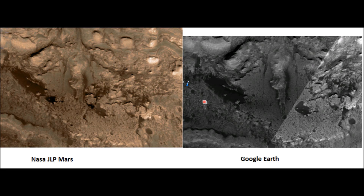Hello everybody, this is a response to Sunsflare's video about NASA JPL Mars copy-pasted pictures. I made a comparison between a Google Earth picture, which I took with Fraps, and a NASA JPL Mars picture, and you can clearly see that there are so many things missing on Google Earth and so many things added on JPL Mars pictures.